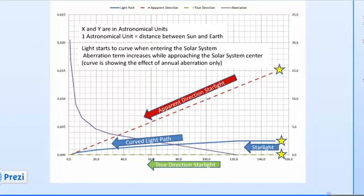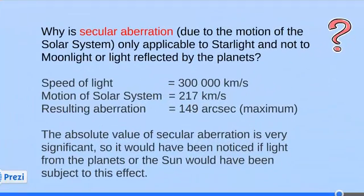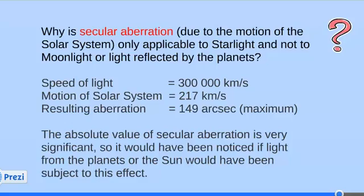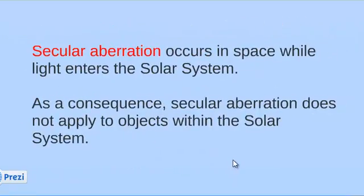Let's now consider the motion of the solar system itself, which is 217 km per second — the reason why we have something called secular aberration. The speed of light is 300,000, the motion of the solar system is 217, and the resulting aberration is 149 arc seconds, which is quite significant. If planets or the Moon were subject to this amount of aberration, you would certainly have noticed it. But this is not something that was reported, so secular aberration must also occur in space while light enters the solar system, and as a consequence it does not apply to objects from within the solar system.